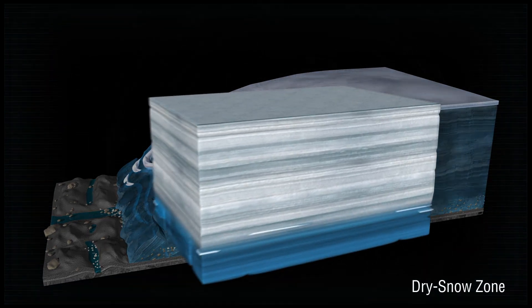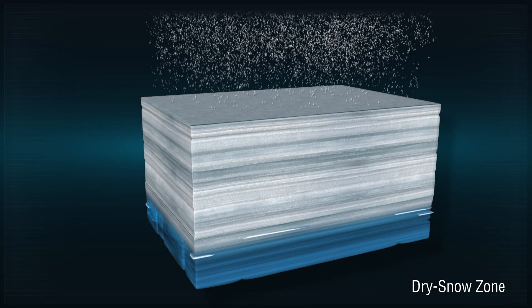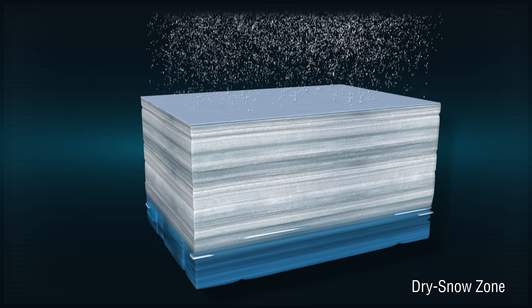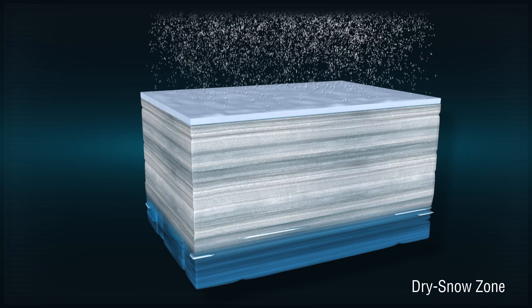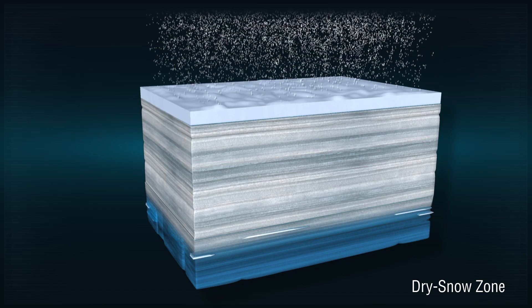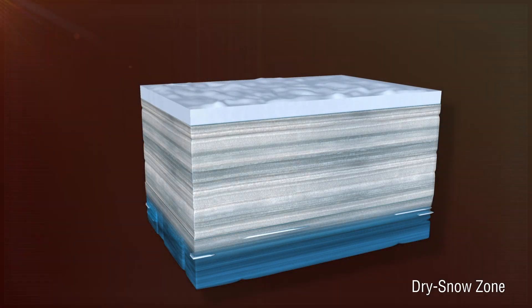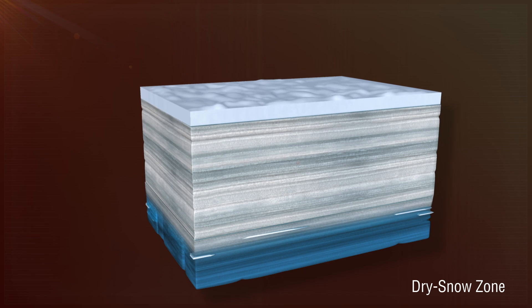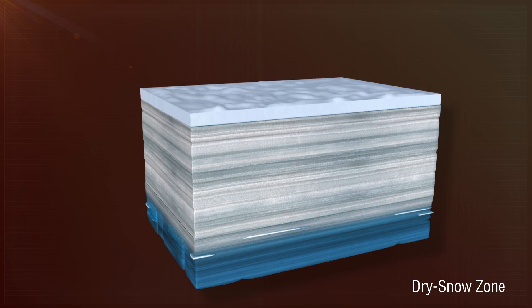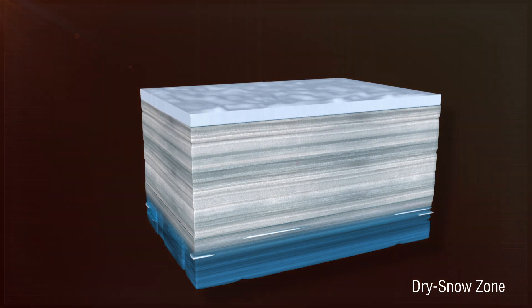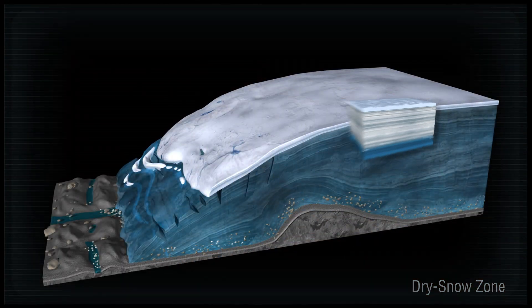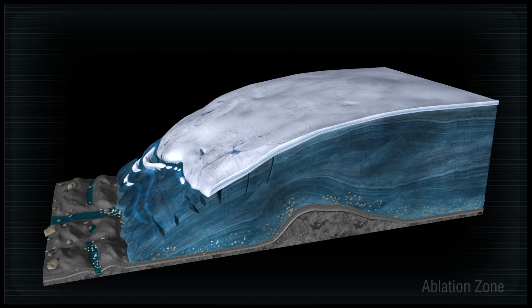We have a cutaway of the Greenland ice sheet. At the highest elevations we have what we call the dry snow zone. Snow accumulates every winter there, but in the summers it doesn't really get warm enough to melt the snow. The snow just compacts down to what we call firn and eventually into glacial ice. This layer of firn can be anywhere from 100 to 300 feet thick.